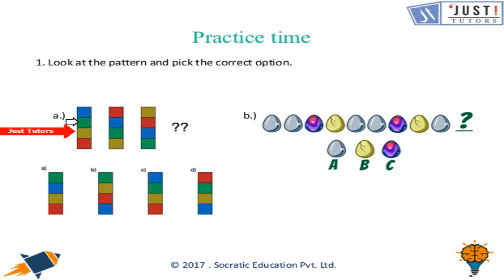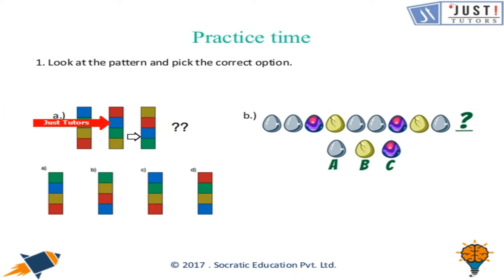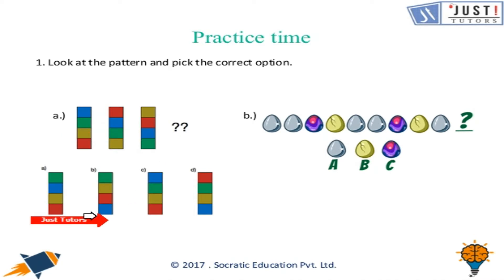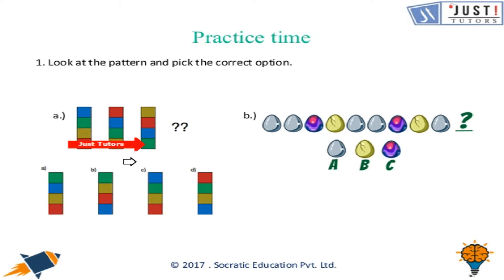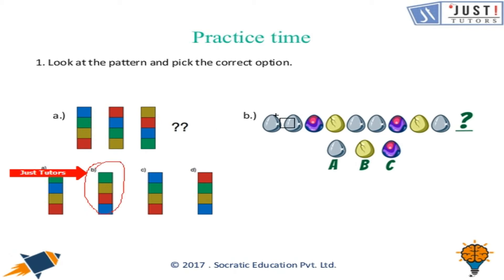Look at the pattern and pick the correct option. The first square is blue, the second square is blue, the third square is blue — so the fourth square should be blue. Checking the green squares: second is green, then third is green, then fourth is green — so first should be green. We conclude that the second option is the correct answer.